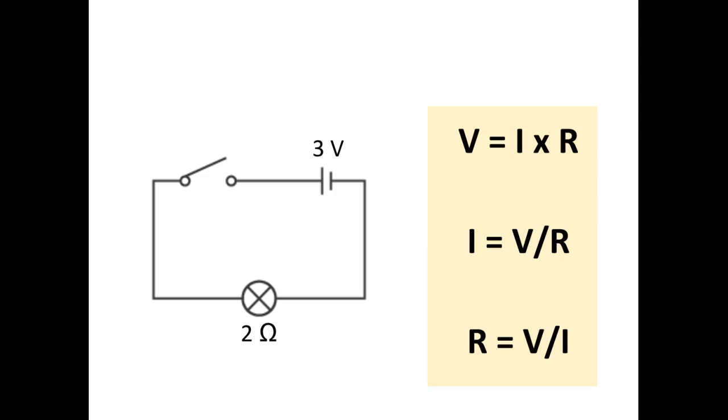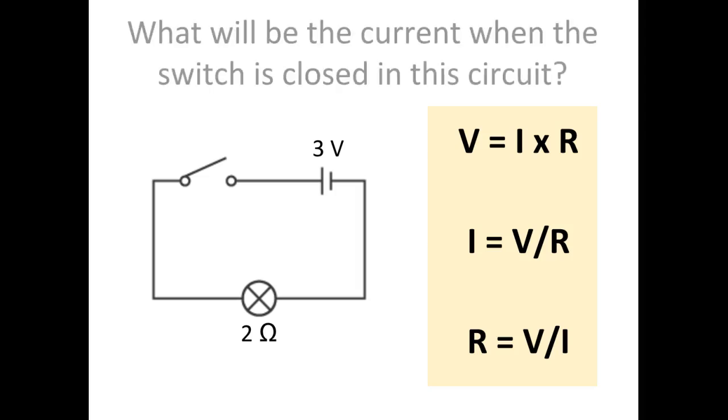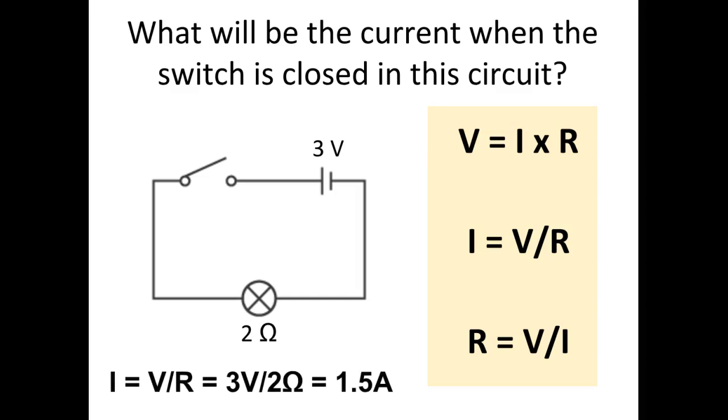Let's look at this circuit. In this circuit we have a 3-volt battery and a 2-ohm light bulb. What will be the current when the switch is closed? First identify what you're solving for, then substitute the numbers and calculate. The answer is 1.5 amps. I equals V over R equals 3 volts divided by 2 ohms equals 1.5 amps.